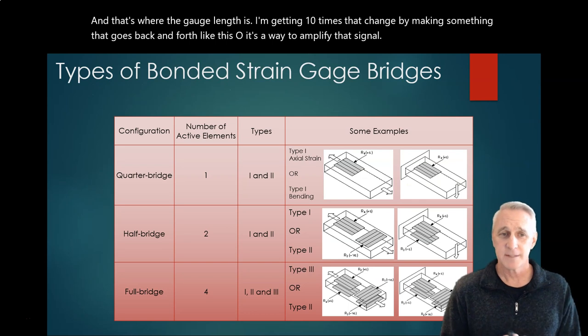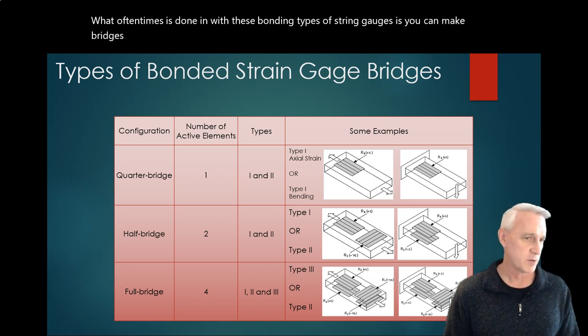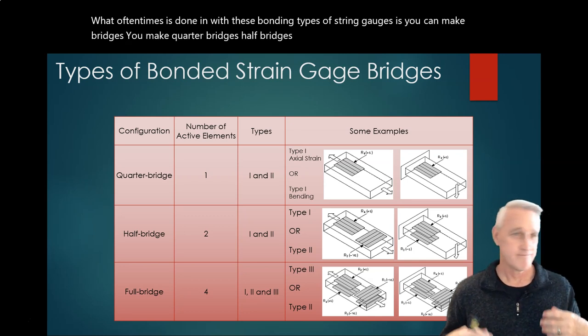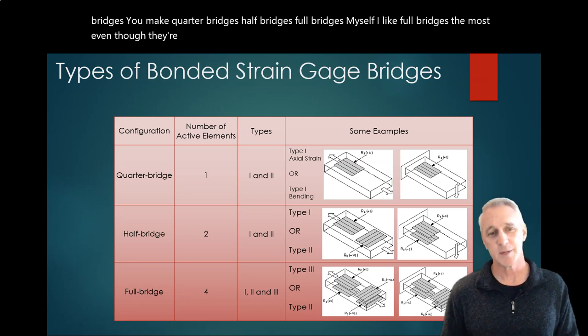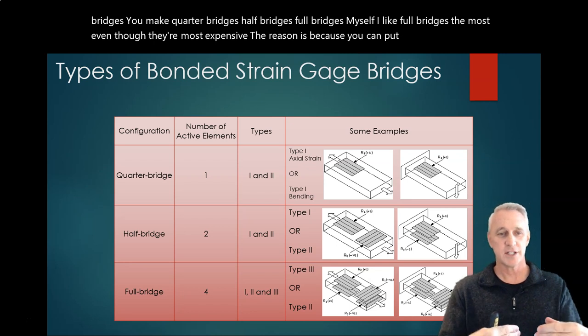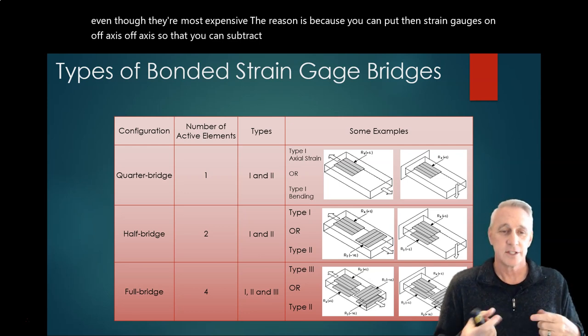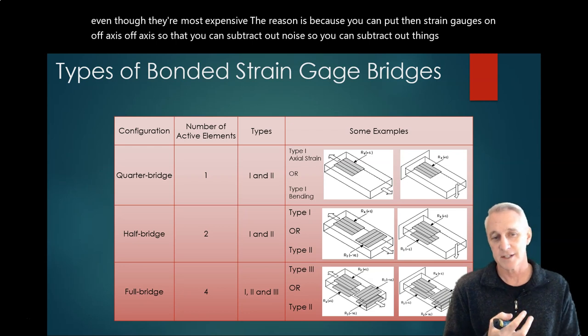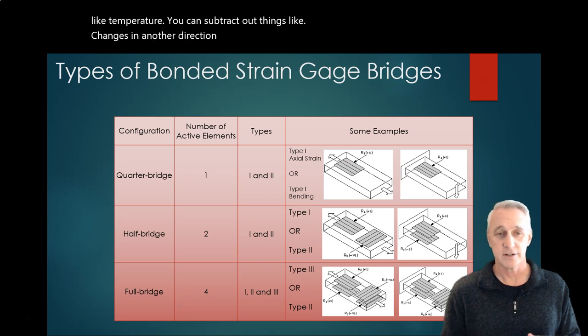Now, what oftentimes is done with these bonding types of strain gauges is you can make bridges. You can make quarter bridges, half bridges, full bridges. Myself, I like full bridges the most, even though they're most expensive. The reason is because you can put strain gauges on off axes so that you can subtract out noise. So you can subtract out things like temperature. You can subtract out things like changes in another direction that's not on the axis that you're interested in.